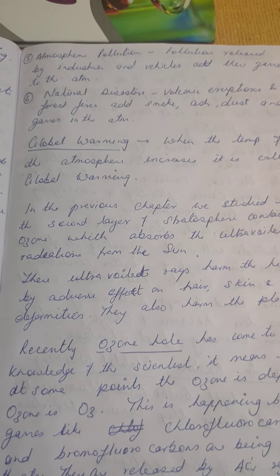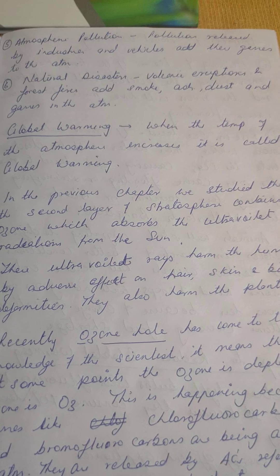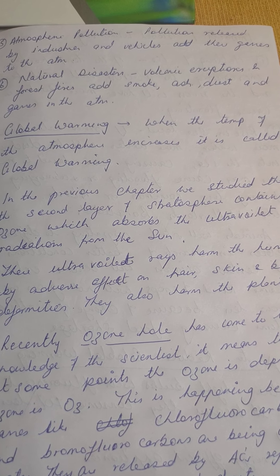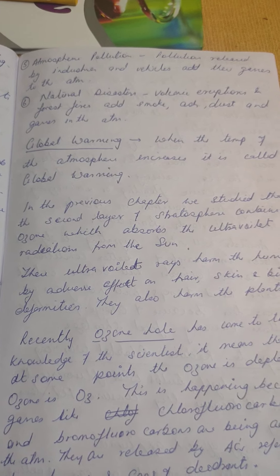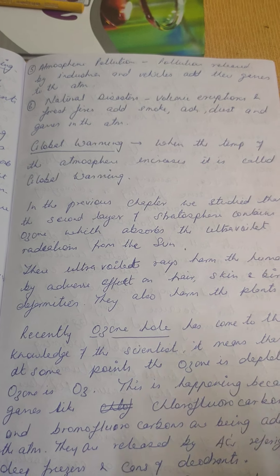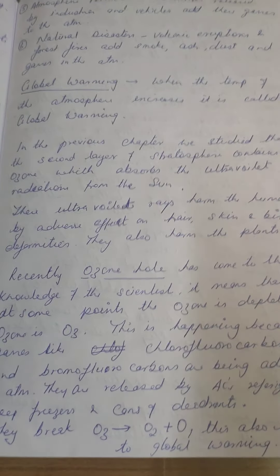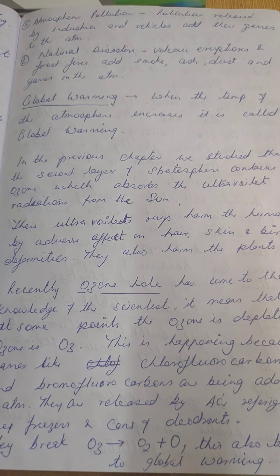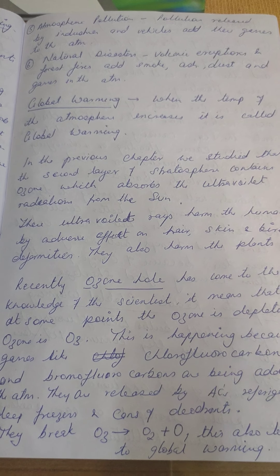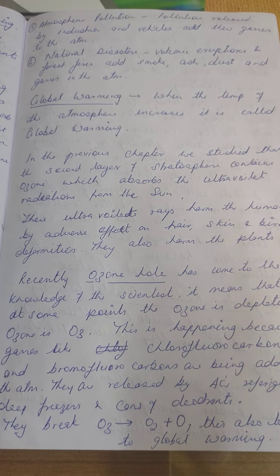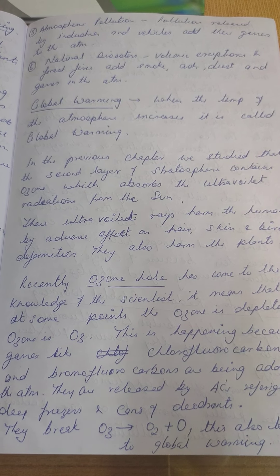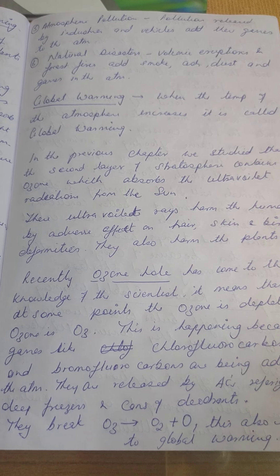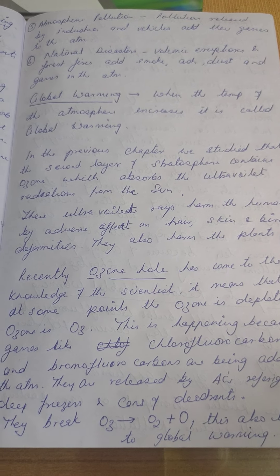Natural disasters such as volcanic eruptions and forest fires add smoke, ash, dust, and gases into the atmosphere. All of these contribute to the greenhouse effect, and as a result, the temperature of the atmosphere increases — this is called global warming.